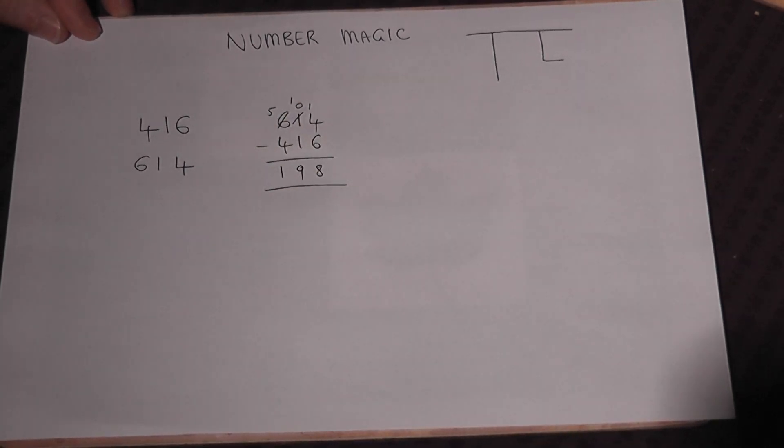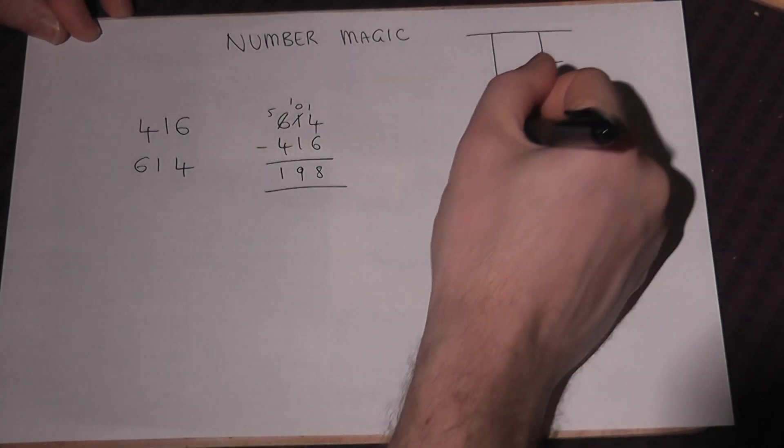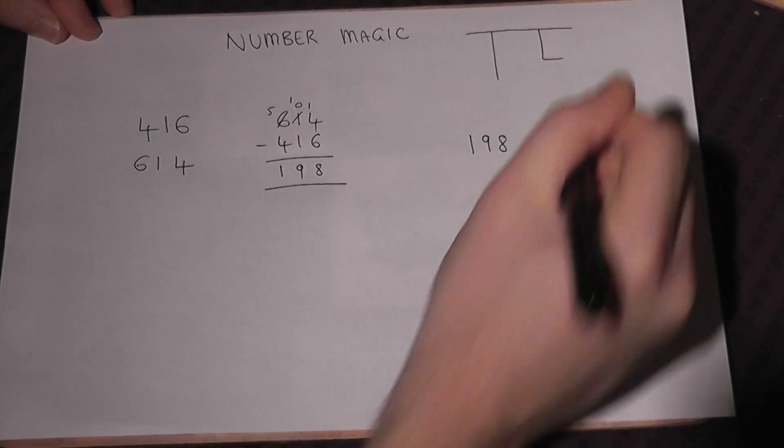So you've got a new number. So write out your number and then write it out again backwards.